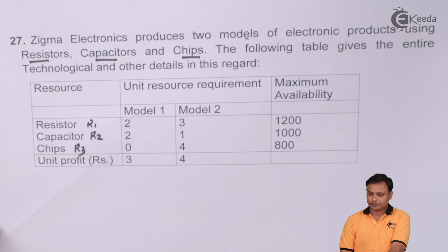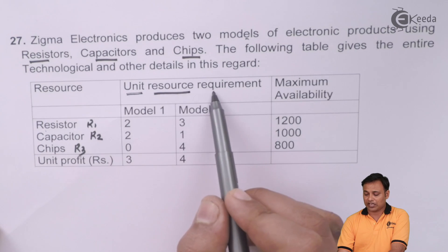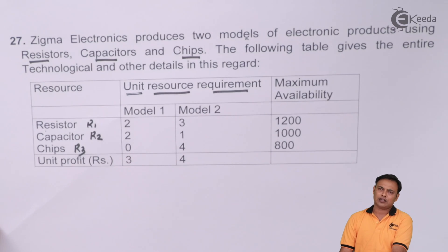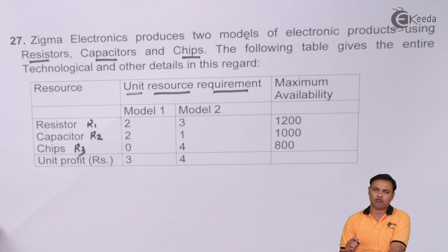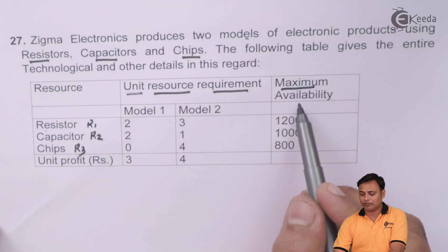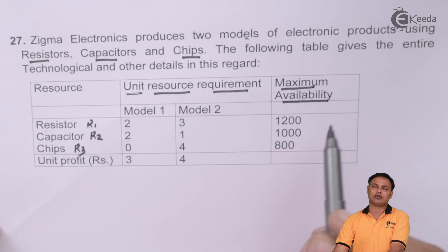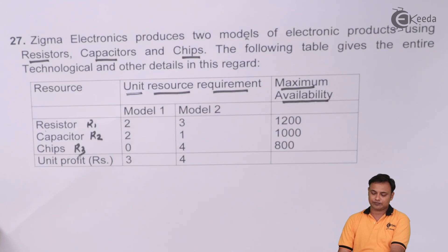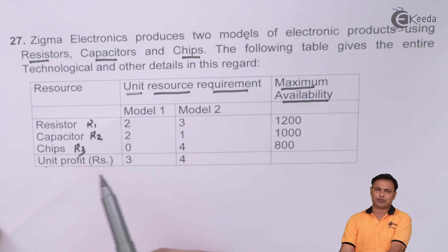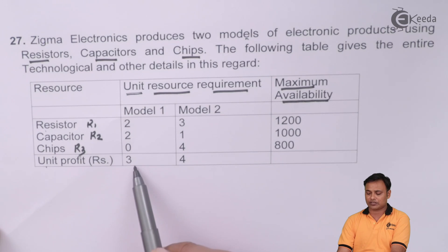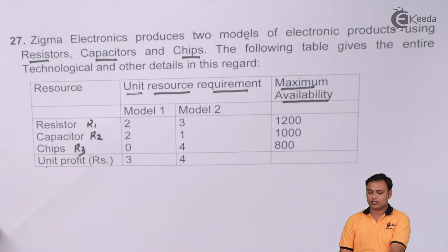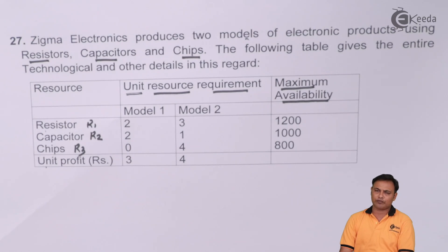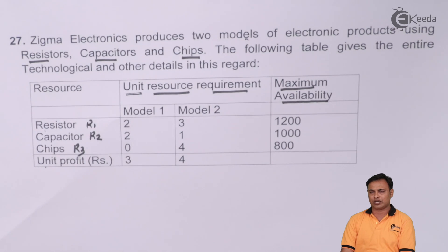Then we have the unit resource requirement — that is, the material or resources required per unit. We also have the maximum availability or maximum supply. In the last row, we are given the unit profit: the profit per unit for model 1 is 3 rupees, and for model 2 it is 4 rupees. We need to make an assumption first. Since we have already been given a table, there is no need to create a tabular format as we do in earlier problems.